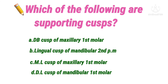Next question: which of the following are supporting cusps? Option A distobuccal cusp of maxillary first molar, B lingual cusp of mandibular second premolar, C mesiobuccal lingual cusp of maxillary first molar, D distolingual cusp of mandibular first molar. Supporting cusps are the working or functional cusps — in maxillary teeth it is the lingual cusp, and in mandibular teeth it is the buccal cusp. These cusps function by occluding against opposing teeth. The tip of the supporting cusp usually rests in the opposing marginal ridge area, with the exception of the mesiopalatal cusp of maxillary molars and the distobuccal cusp of mandibular molars, which rest in the opposing central fossa. The answer is option C, the mesiobuccal lingual (mesiopalatal) cusp of maxillary first molar.